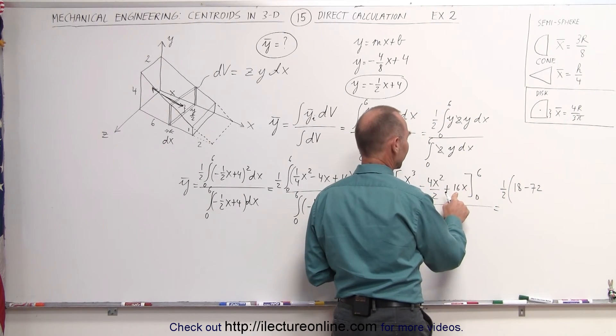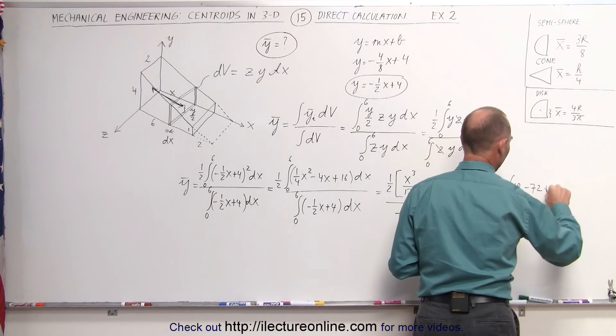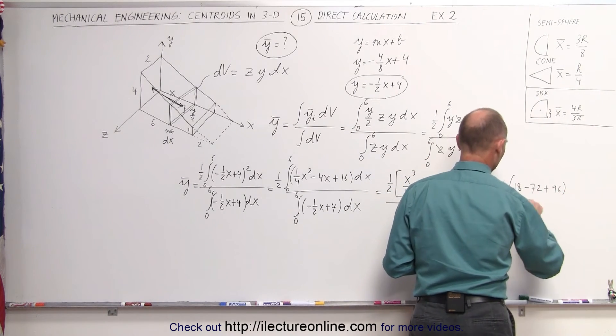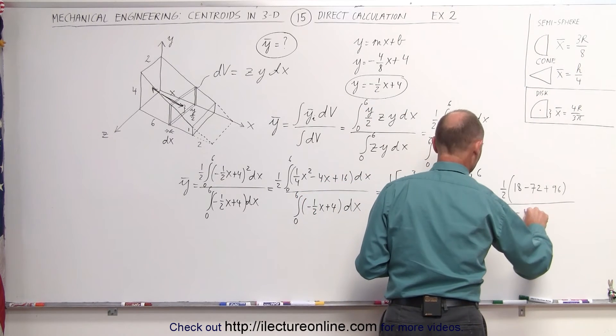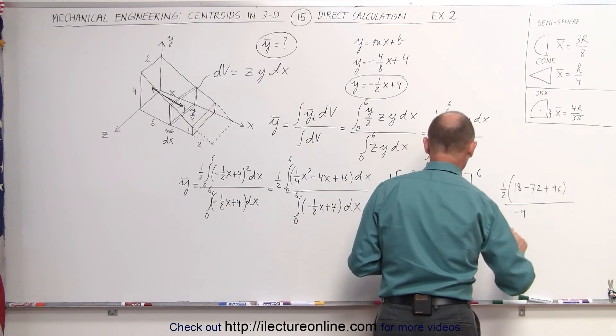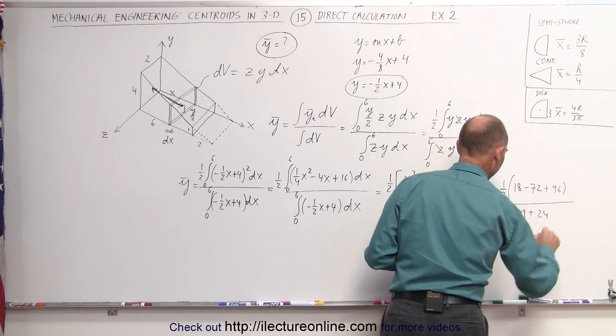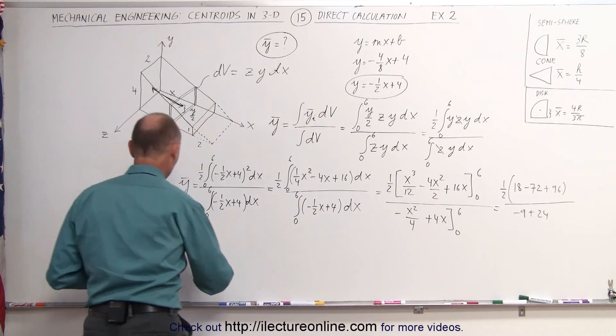And here, 6 times 16, that's 60, that's 96 plus 96, all divided by, here we get 36 divided by 4, which is minus 9, and 6 times 4 plus 24.